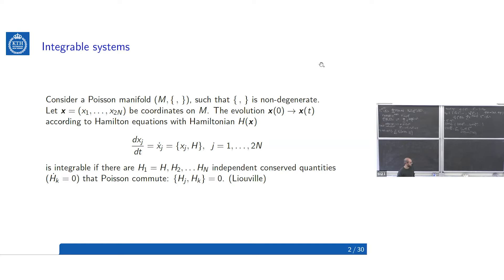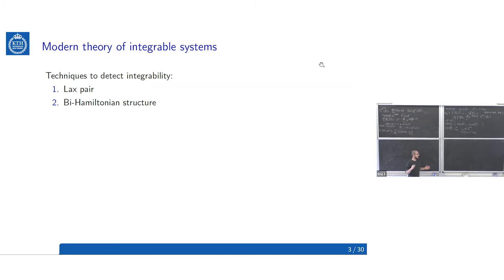The problem is that it's usually pretty complicated to find those conserved quantities, so we look for methods to produce them automatically. The best two ways, at least to me, are finding a Lax pair formulation for the system, or finding a bi-Hamiltonian structure for the Poisson bracket. Since we are going to talk about just Lax pairs, I will recap what a Lax pair is.